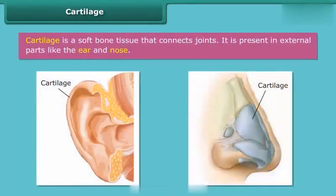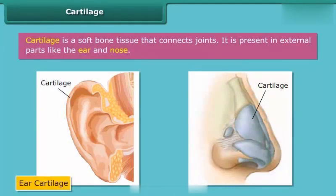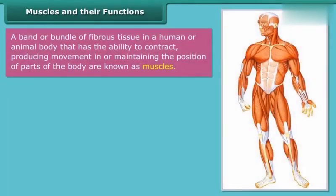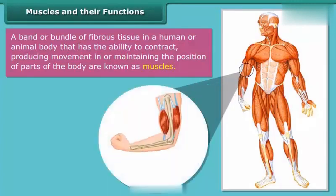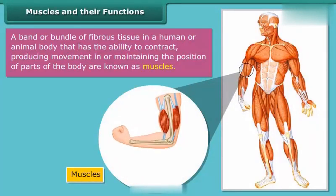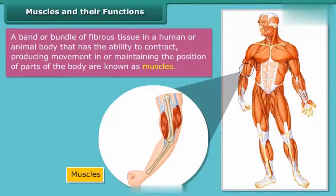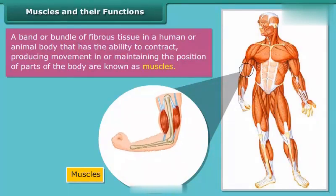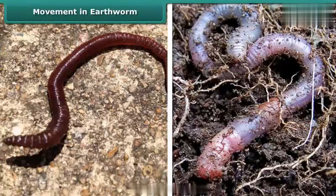Cartilage is a soft bone tissue that connects joints. It is present in external parts like the ear and nose. A band or bundle of fibrous tissue in a human or animal body that has the ability to contract, producing movement or maintaining the position of body parts, is known as a muscle. The movement of the body is controlled by alternate contractions and relaxations of two sets of muscles.